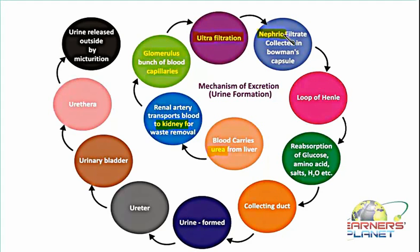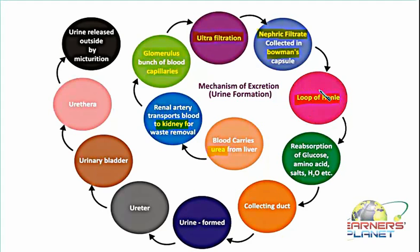This nephric filtrate goes further into the Bowman's capsule, and from the Bowman's capsule it is transferred to the loop of Henle. The Bowman's capsule has a highly permeable membrane, so as soon as the nephric filtrate is collected, it is drained into the loop of Henle — the tubular part of the nephron. While crossing through this tubular part, there is reabsorption.